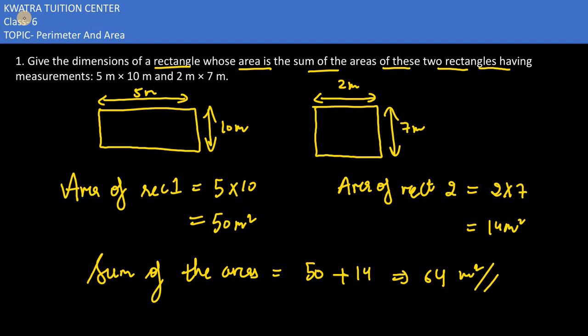So what is the sum of these two rectangles? It would be 64 meter square.